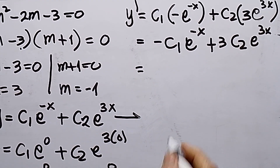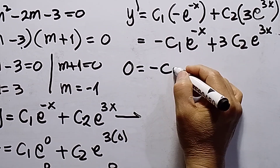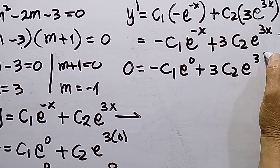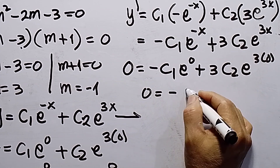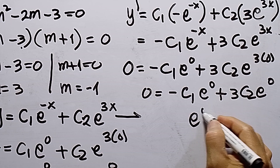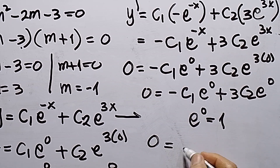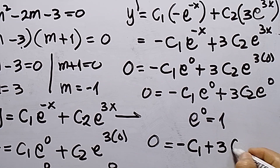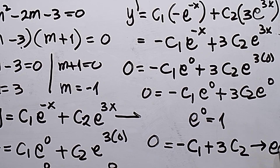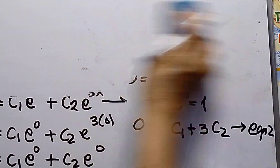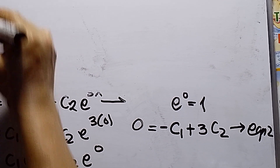Applying the condition y prime equals 0 when x equals 0: 0 equals negative c1·e^0 plus 3c2·e^0. Since e^0 equals 1, this gives 0 equals negative c1 plus 3c2. This is Equation 2.